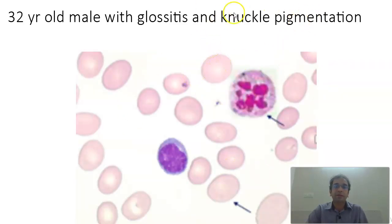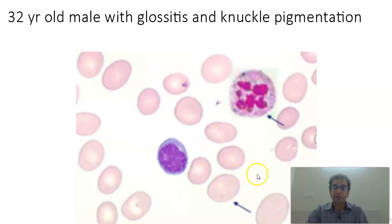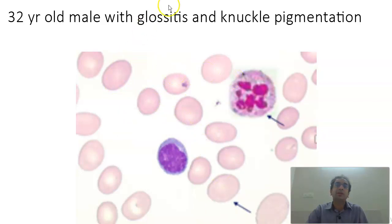Coming to the next slide: a 32-year-old with glossitis and knuckle pigmentation. What you find is a hypersegmented neutrophil with more than 5 lobes — 6 lobes here. Macrocytes are present; the cells are round and oval macrocytes. Comparing with the lymphocyte as reference, this cell is definitely a little larger and oval in shape. The history is also clear — glossitis goes for vitamin B12 deficiency and knuckle pigmentation again goes for vitamin B12 deficiency. So this is a case of macrocytic anemia.